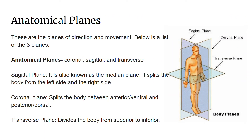Anatomical planes — these are the planes of direction and movement. The three planes are the coronal, sagittal, and transverse planes. The sagittal plane, also known as the median plane, splits the body into left and right sides. The coronal plane splits the body into the anterior or front and posterior or dorsal sides. The transverse plane divides the body into the upper or superior and lower or inferior sides.